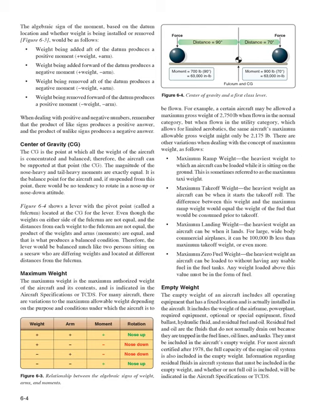Maximum Weight: The maximum weight is the maximum authorized weight of the aircraft and its contents, indicated in the aircraft specifications or TCDS. For many aircraft, the allowable weight varies by purpose; for example, an aircraft may be allowed 2,750 pounds in the normal category but only 2,175 pounds in the utility category. Variations include: maximum ramp weight (heaviest weight while on the ground, sometimes called maximum taxi weight); and maximum takeoff weight (heaviest weight at the start of takeoff roll—the difference from ramp weight equals fuel burned prior to takeoff).